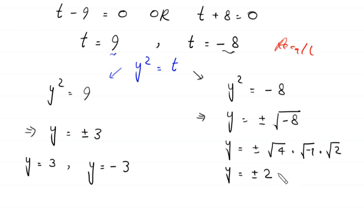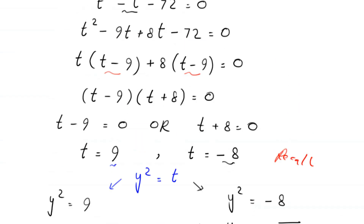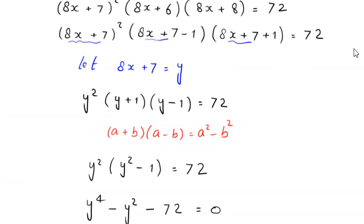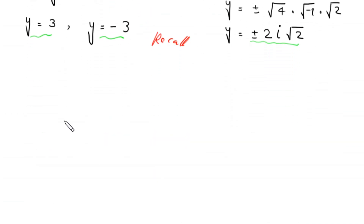From y²=−8, taking square roots gives y = ±2i√2, since √(−8) = √4 · √2 · √(−1) = 2i√2. So we have four values of y: y = 3, −3, and ±2i√2. To find x, recall that we supposed 8x+7 = y.